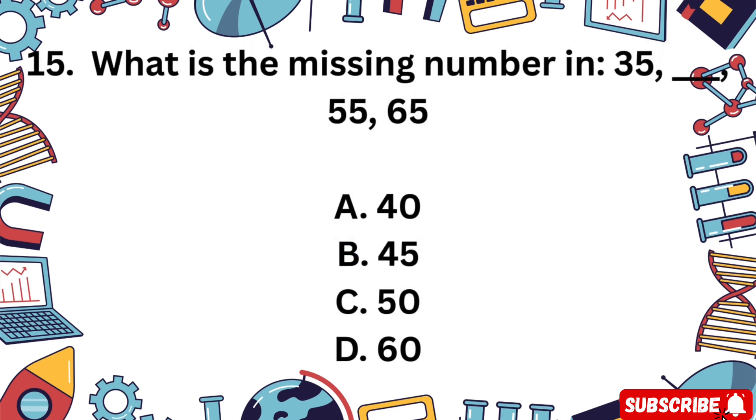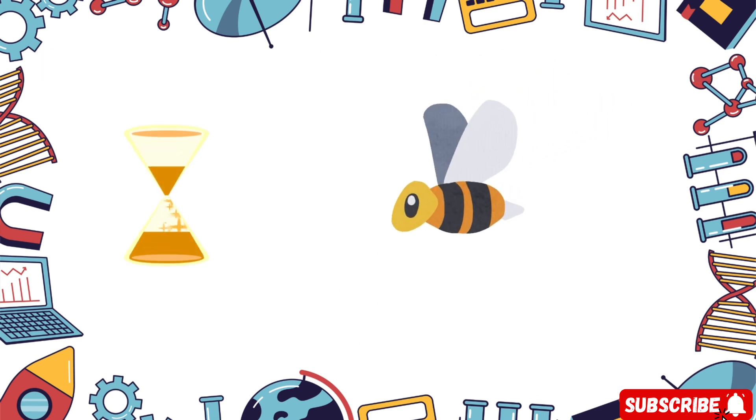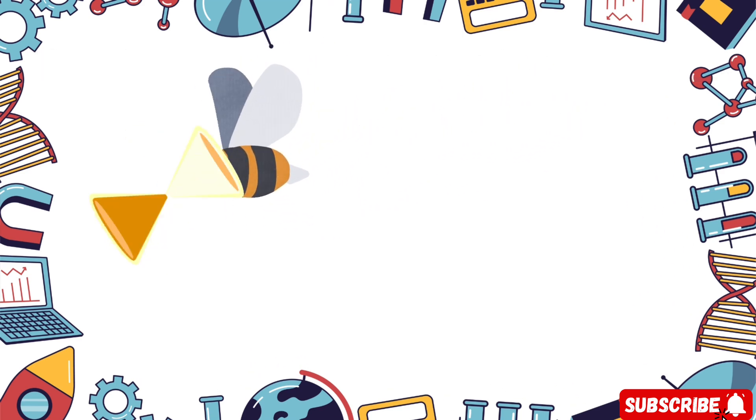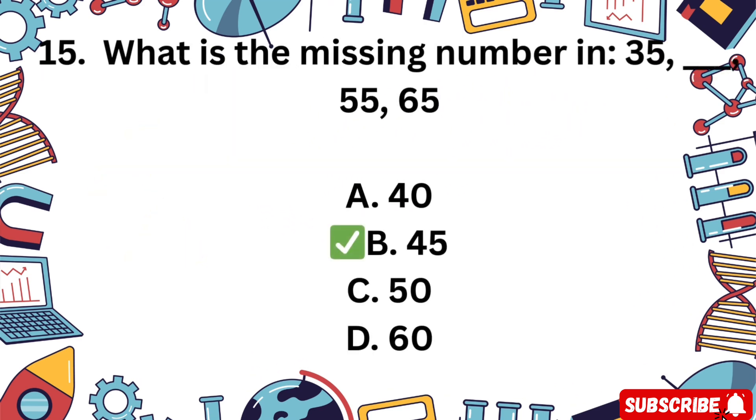Question 15. What is the missing number in this pattern? 35, blank, 55, 65. A 40, B 45, C 50, D 60. Complete the pattern. Time starts now. The correct answer is B 45. It increases by 10 each time.